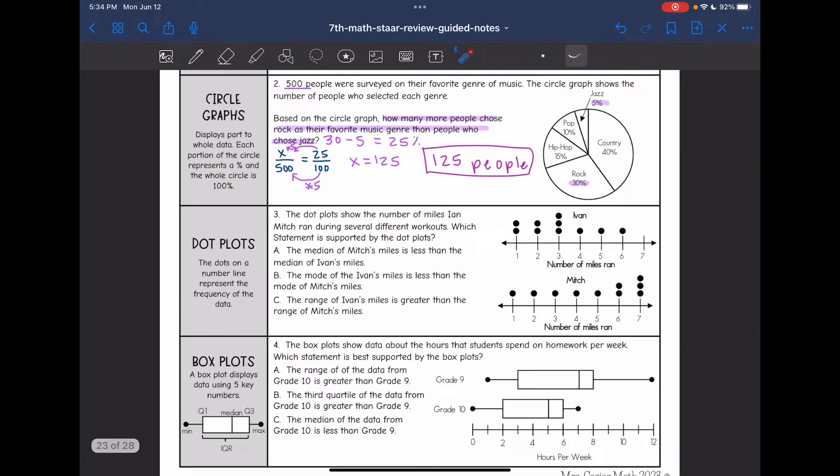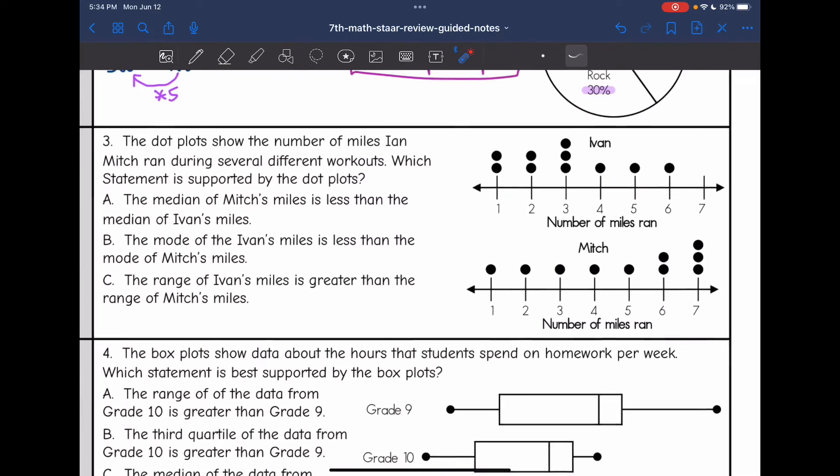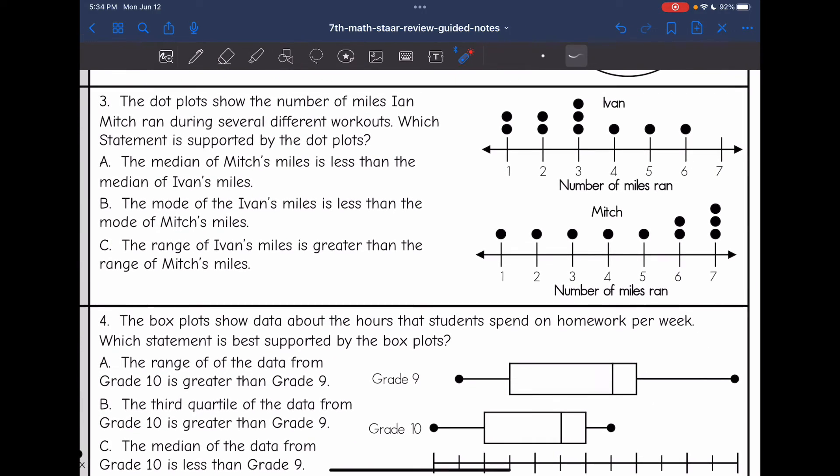Let's look at dot plots next. So dot plots look like this, where the dots are on a number line and they represent the frequency of the data. So number three says the dot plot shows the number of miles Ian and Mitch ran during several different workouts. Which statement is best supported by the dot plots?